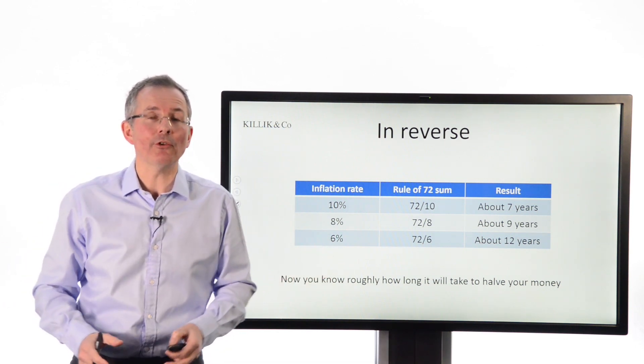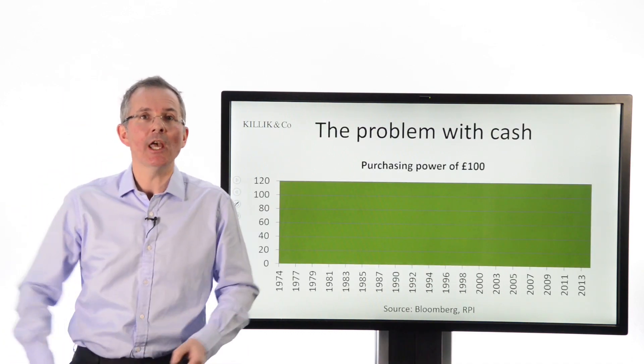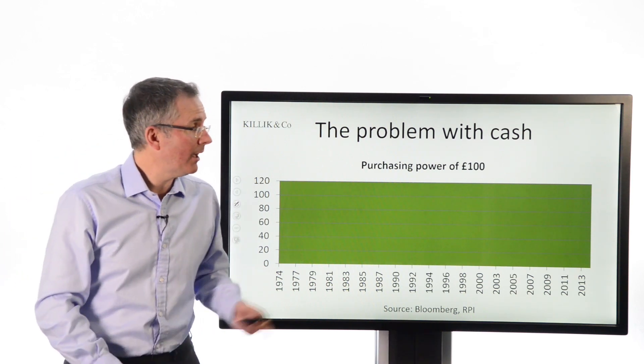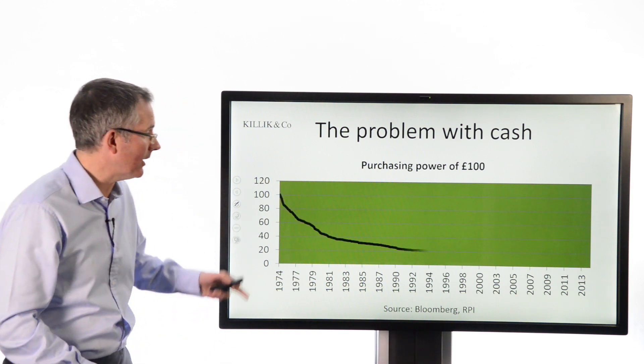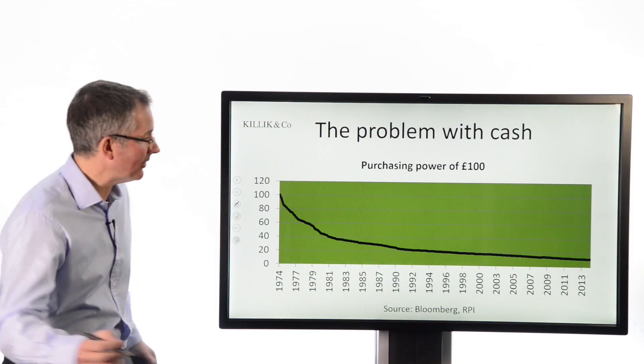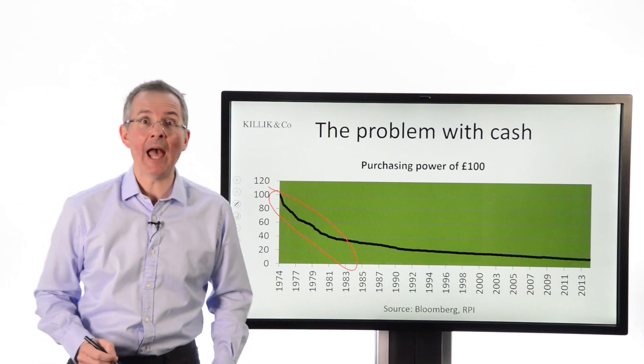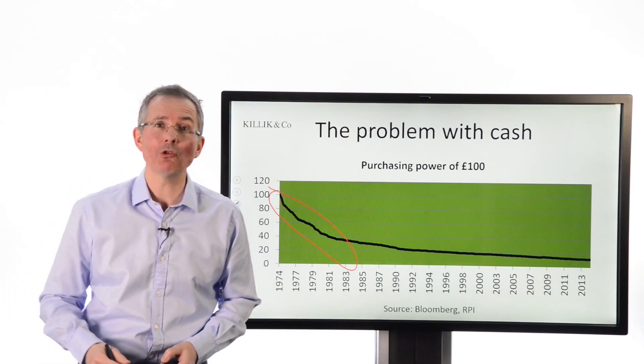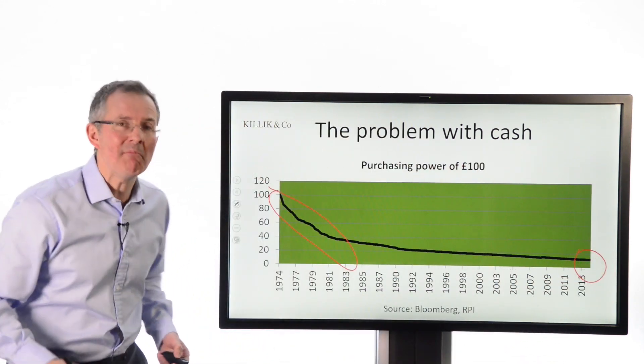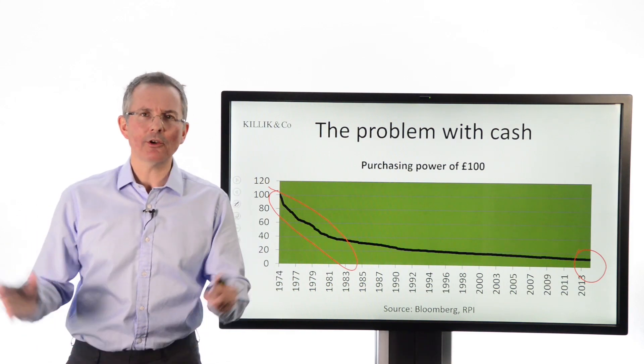And that's interesting for investors when you look at what I've called before the problem with cash. The problem with cash is that in real terms, it is basically eroding your ability to buy stuff. If we go back to the early 70s and look at the purchasing power of £100, well, it didn't take long to halve that when inflation was much higher than it is now. Only took a handful of years. Rule of 72 would have told you how long. And now you're right down to more like £6 or £7 worth of purchasing power. Pretty bad news.